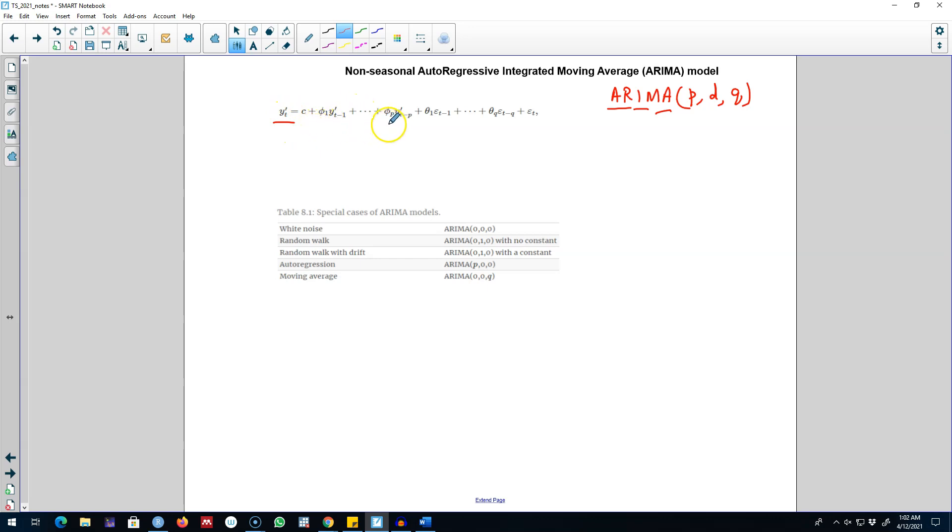Now we included p lags of this differenced series in our model - that is why this model contains p lags of y_t prime in it. Similarly, we included q lags of the error in our model. That is why this model is referred to as ARIMA(p,d,q). Here are some special cases of ARIMA models.